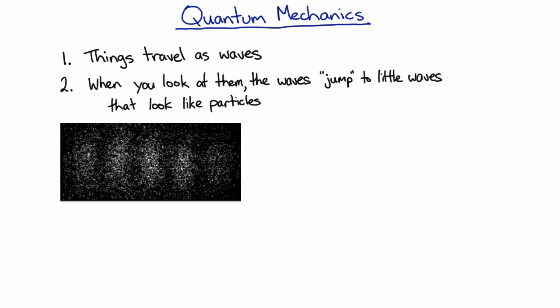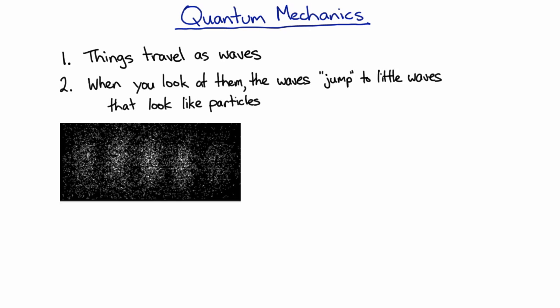So everything, all kinds of matter, all kinds of light, everything appears to travel as waves, and when you look at them, it jumps. So quantum mechanics is the model for all stuff in the universe. And in fact, two-slit interference has been performed on molecules containing almost a thousand atoms.